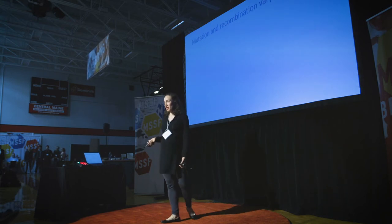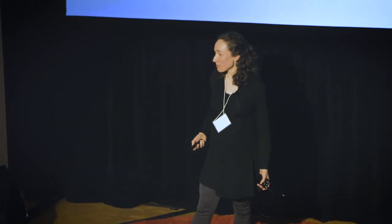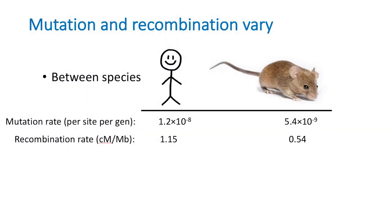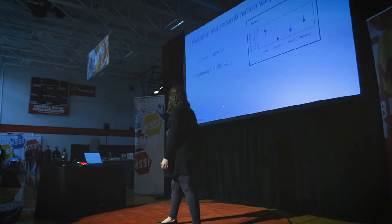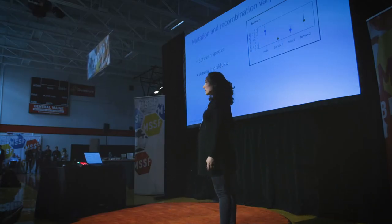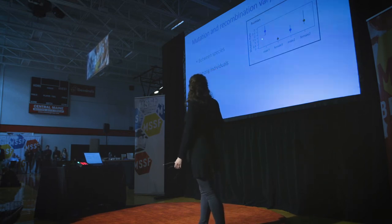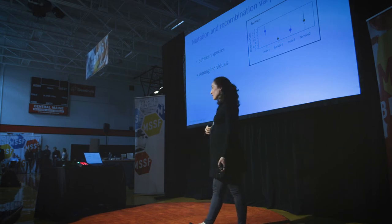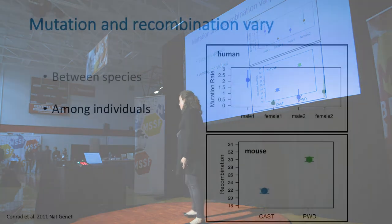The mechanisms governing inheritance — mutation and recombination — are actually even more complicated than I've alluded to, because these processes are themselves incredibly variable. Mutation and recombination vary between species; for example, the mutation rate in humans is roughly twice the mutation rate in mice. Similarly, there's roughly a two-fold difference in the frequency of recombination between humans and mice. There are also very pronounced differences in mutation and recombination between different individuals, as shown here in a plot of mutation rates in four different humans — two males in blue and two females in green.